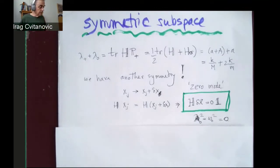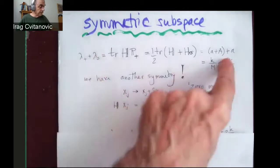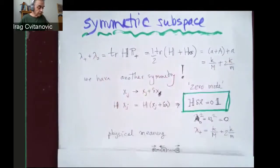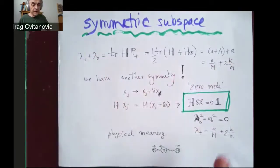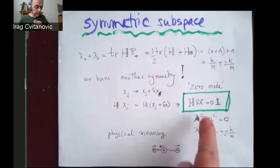And that means that the extra term satisfies equation that H acting on the extra term is zero. And this is a matrix, so this is a matrix of zero, which I write as one times matrix. In other words, a zero mode in the lingua of the subject.